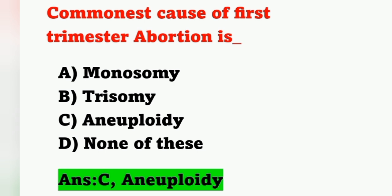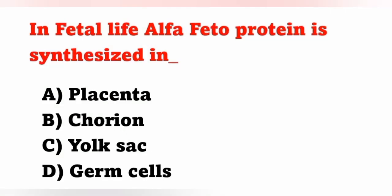Aneuploidy is a chromosomal anomaly in which one chromosome may be missing or one extra chromosome is present. This is the most common cause of abortion in the first trimester — the first three months of pregnancy.